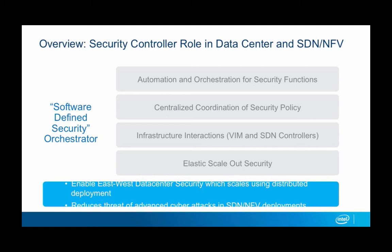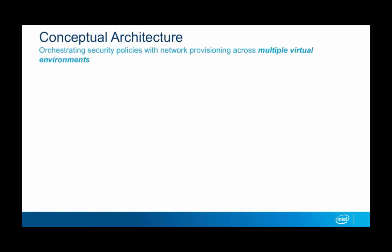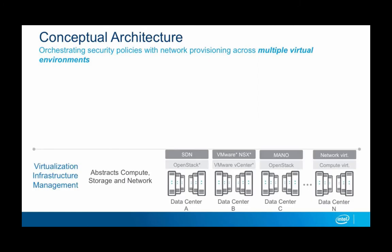Let me talk a bit about the conceptual architecture and where it fits in the data center. Multiple virtual environments are being considered. You have the virtual infrastructure management — OpenStack with an SDN controller — as data center A. Then you have data center B, which is VMware NSX with vCenter on top. And then you have OpenStack with some other layer, plus general compute virtualization, network virtualization, maybe containers, or something else in the future.